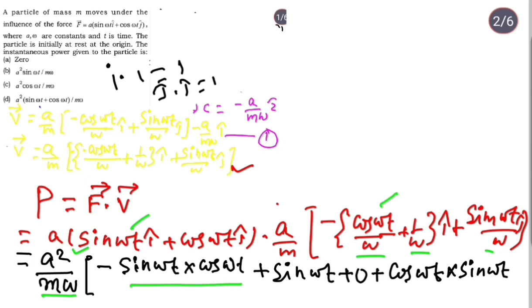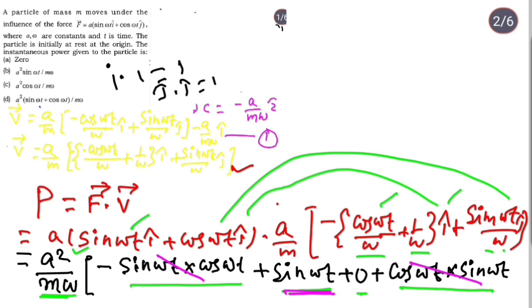Sin ωt into i cap remains sin ωt only. Then j cap into i cap, the whole term becomes zero. J cap and i cap give zero. Then j cap into j cap - we already took the ω out, so only sin ωt and cos ωt remain, giving one. Some terms cancel out here - this term and this term cancel out.